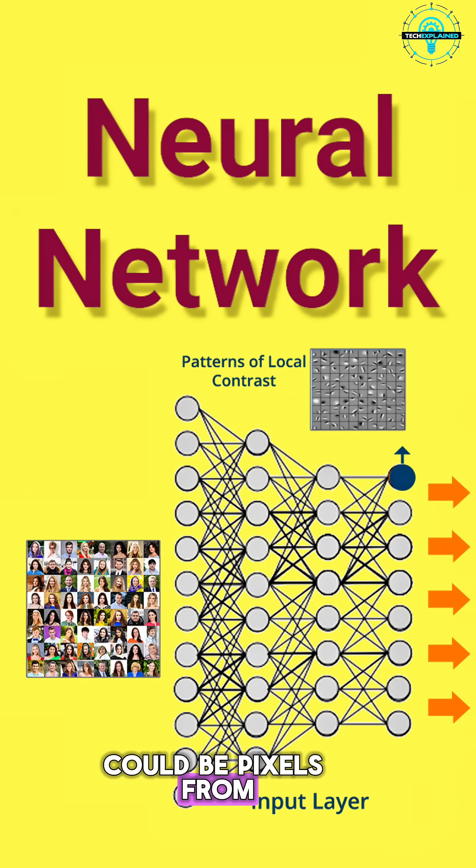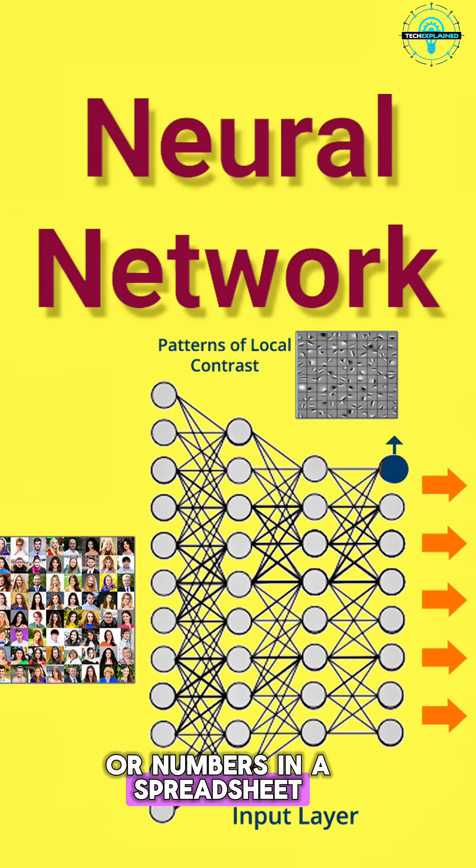That's where raw data comes in. Could be pixels from a photo, words from a sentence, or numbers in a spreadsheet.